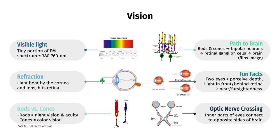Moving on to the visual system, we process light, or differences in the intensity of light, in an incredibly tiny portion of the full electromagnetic spectrum — only wavelengths of about 380 to 760 nanometers. Light is refracted, or bent, by the cornea and lens, and hits the photoreceptors, called rods and cones, in the retina, the back of the eye. Rods are responsible for dark vision and visual acuity, whereas cones are responsible for color vision. Nearsighted individuals have overly curved corneas which bend light too far in front of the retina, whereas farsighted individuals have overly flat corneas which bend light too far behind the retina.